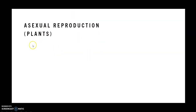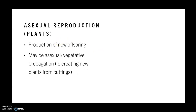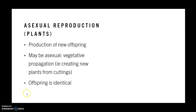First thing to note is asexual reproduction in plants. In asexual reproduction, it is basically the creation of a new offspring, and it may be asexual, meaning there's vegetative propagation happening. An example of that would be like creating new plants from cuttings. In asexual reproduction, the offspring is identical to the parents — it's basically a clone of the parent — and there's only one parent involved.